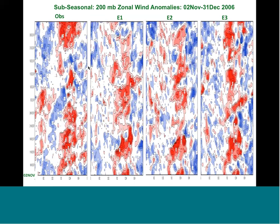For November 2007, same format — observed 200 millibar wind anomalies and then the three ensemble members. There's some predictability out to maybe 20 days in some of the signal. You can see the large-scale imprint and a fair amount of consistency among the ensemble members. The ensemble members may be thinking there's more predictability than there is in terms of forecast skill, but there's something to be encouraged by when you look at these forecasts, at least for the first 20 days, and some signal for a little bit longer.